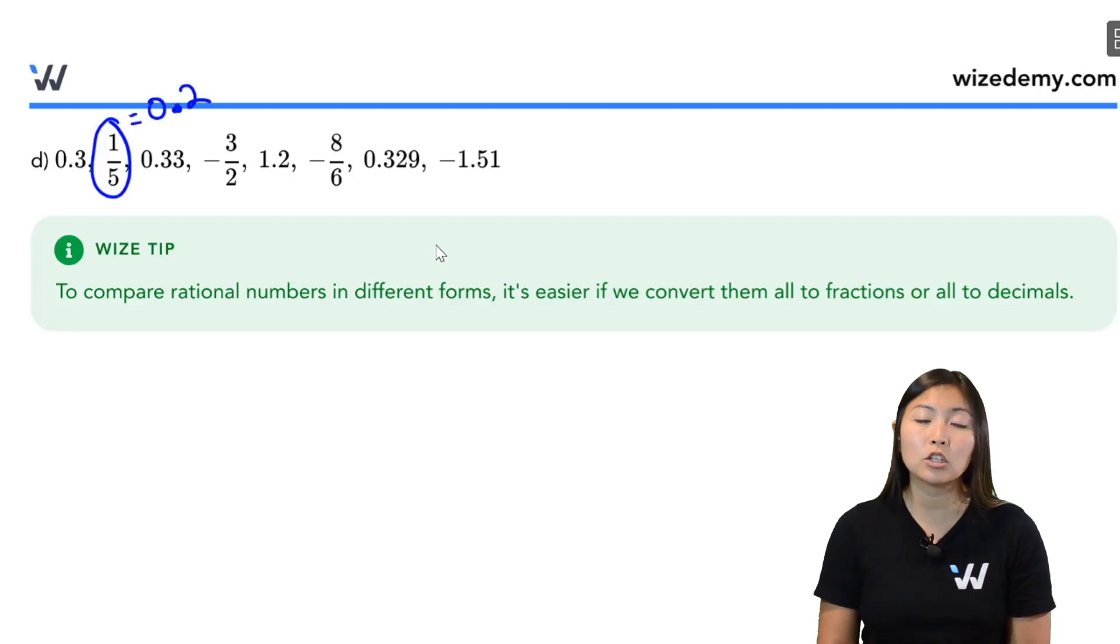Now, if you know of another way to do it by long division, feel free to pause the video and give that a try. Then we have negative 3 halves. Again, taking 3 divided by 2, I get negative 1.5. And finally, negative 8 over 6, that's going to give us negative 1.33 repeating.